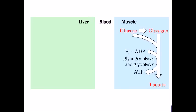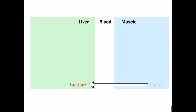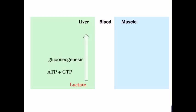In the Cori cycle, lactate is transported from muscle through the bloodstream to liver where it can be converted back to glucose. In the liver, lactate is converted first to pyruvate by lactate dehydrogenase. Pyruvate is converted to glucose through the gluconeogenesis pathway.